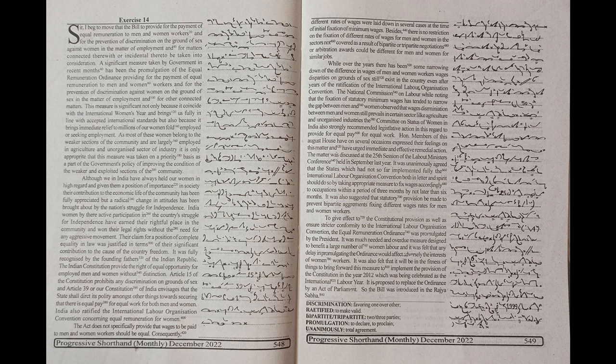It was unanimously agreed that the states which had not so far implemented fully the International Labour Organization Convention, both in letter and spirit, should do so by taking appropriate measure to fix wages according to occupations within a period of three months by not later than six months. It was also suggested that statutory provision be made to prevent bipartite agreements fixing different wage rates for men and women workers to give effect to the constitutional provision as well as ensure stricter conformity to the International Labour Organization convention.